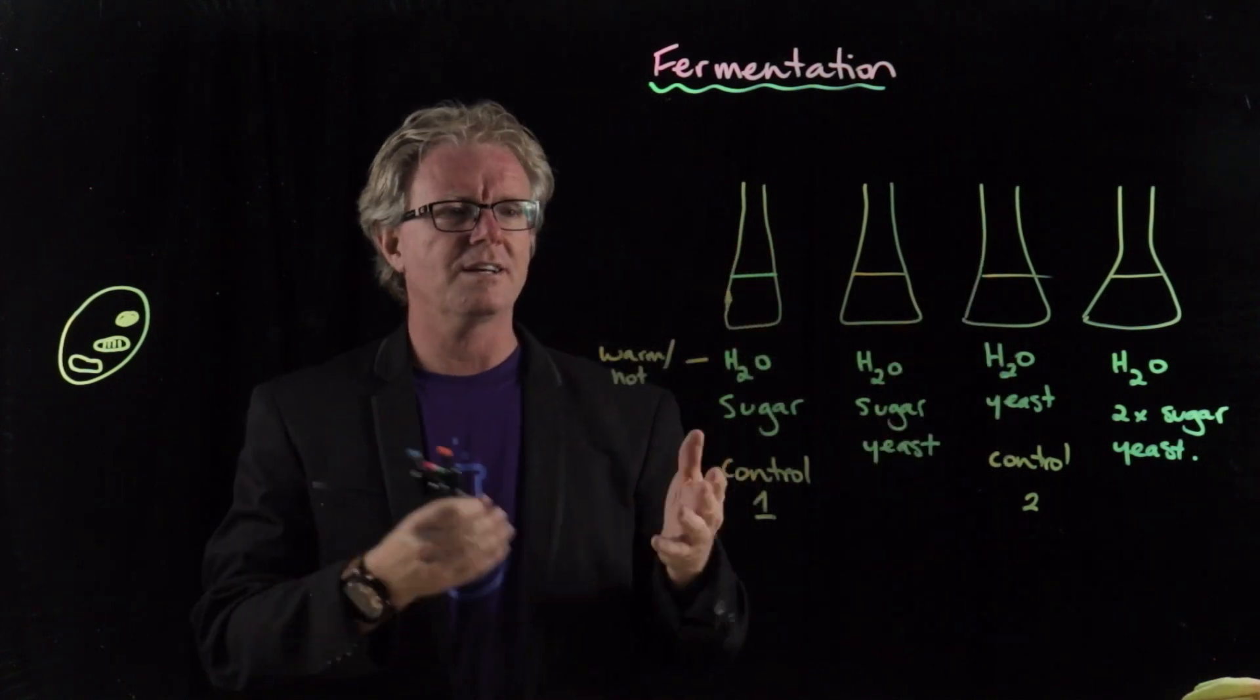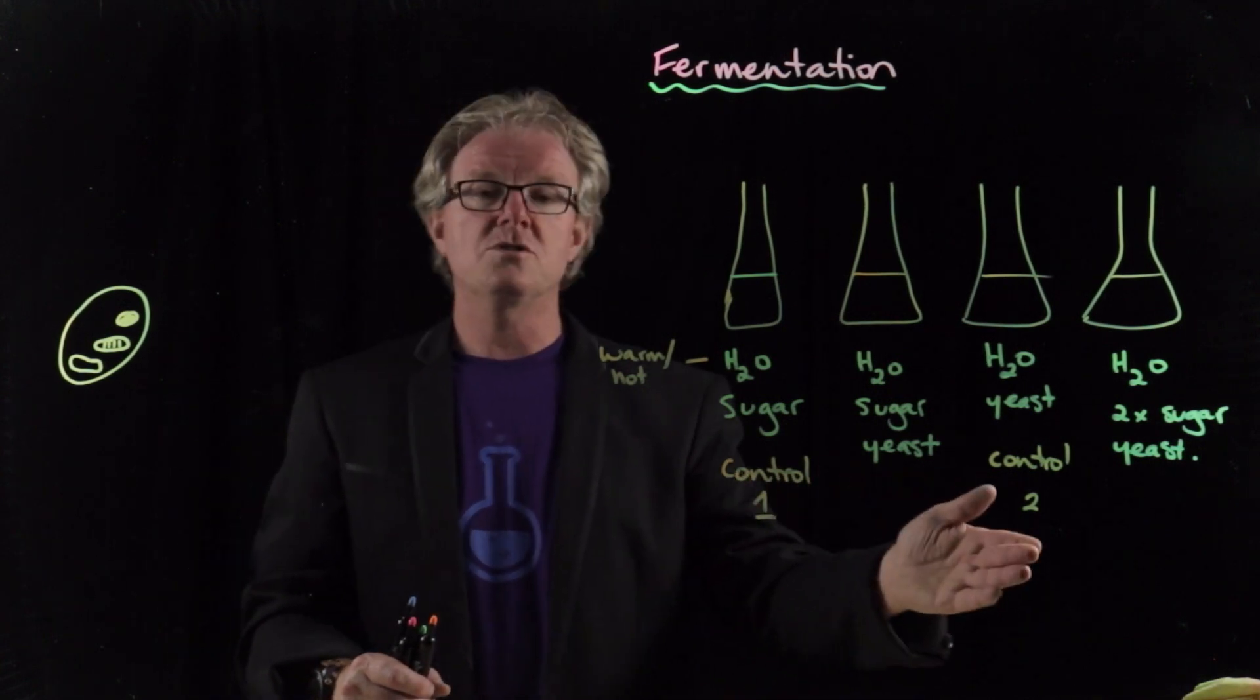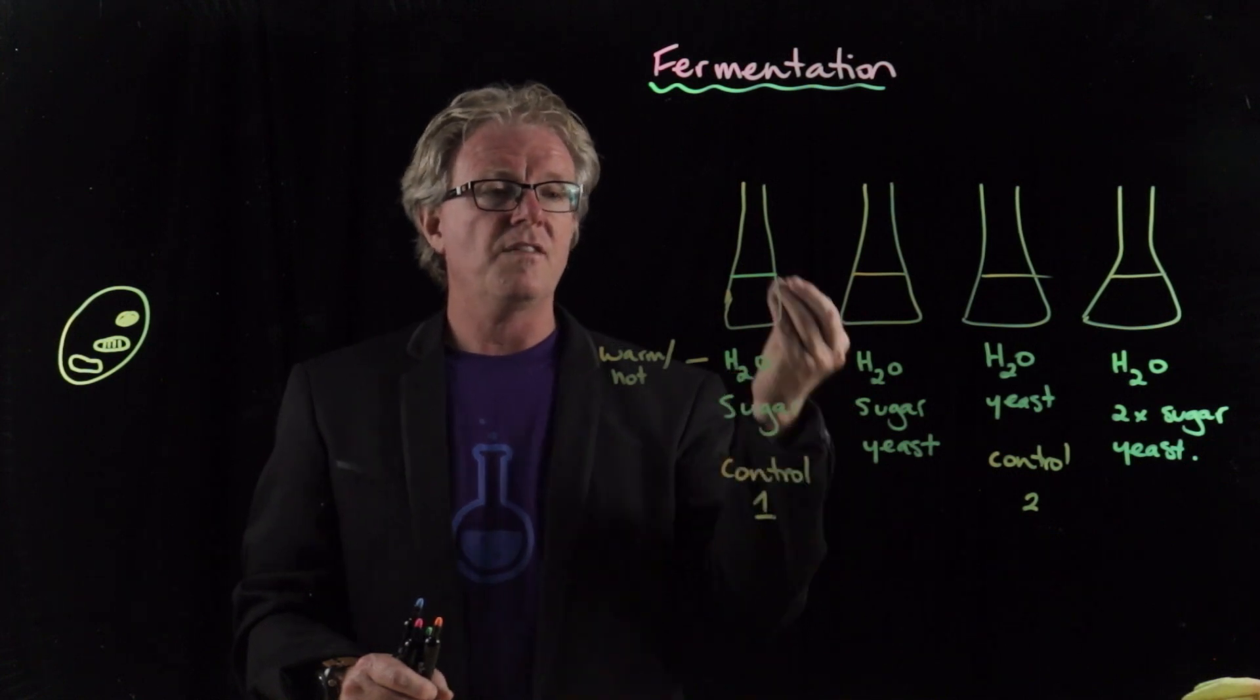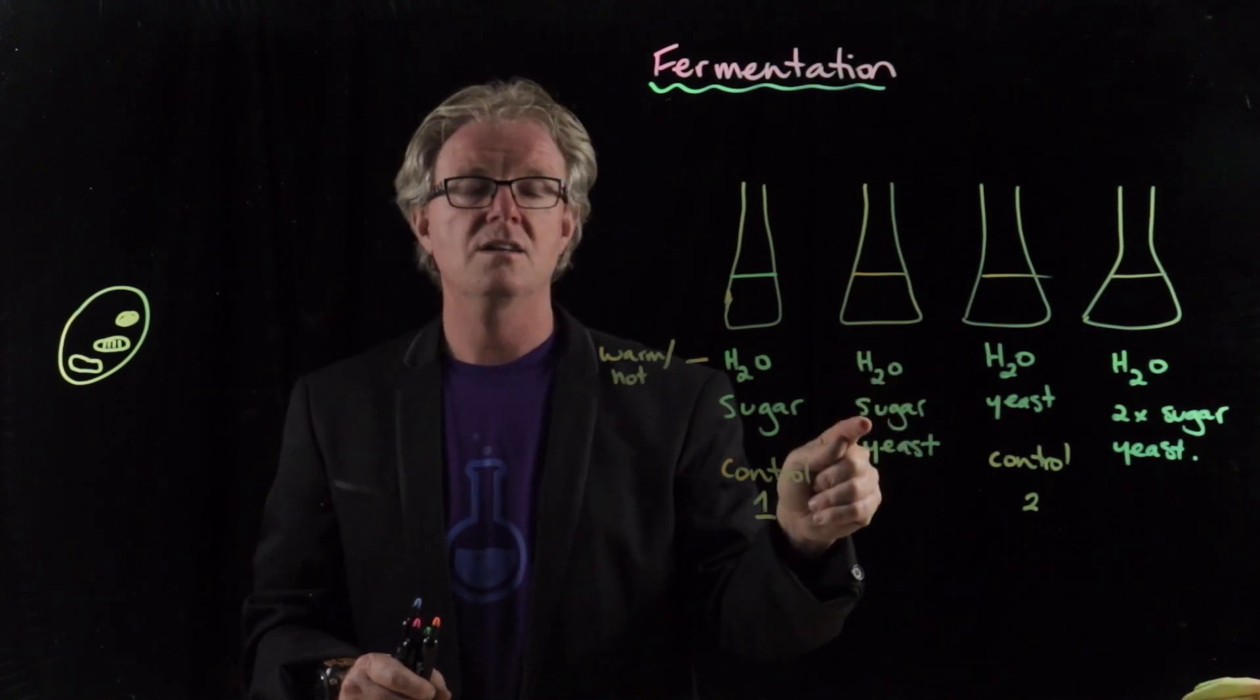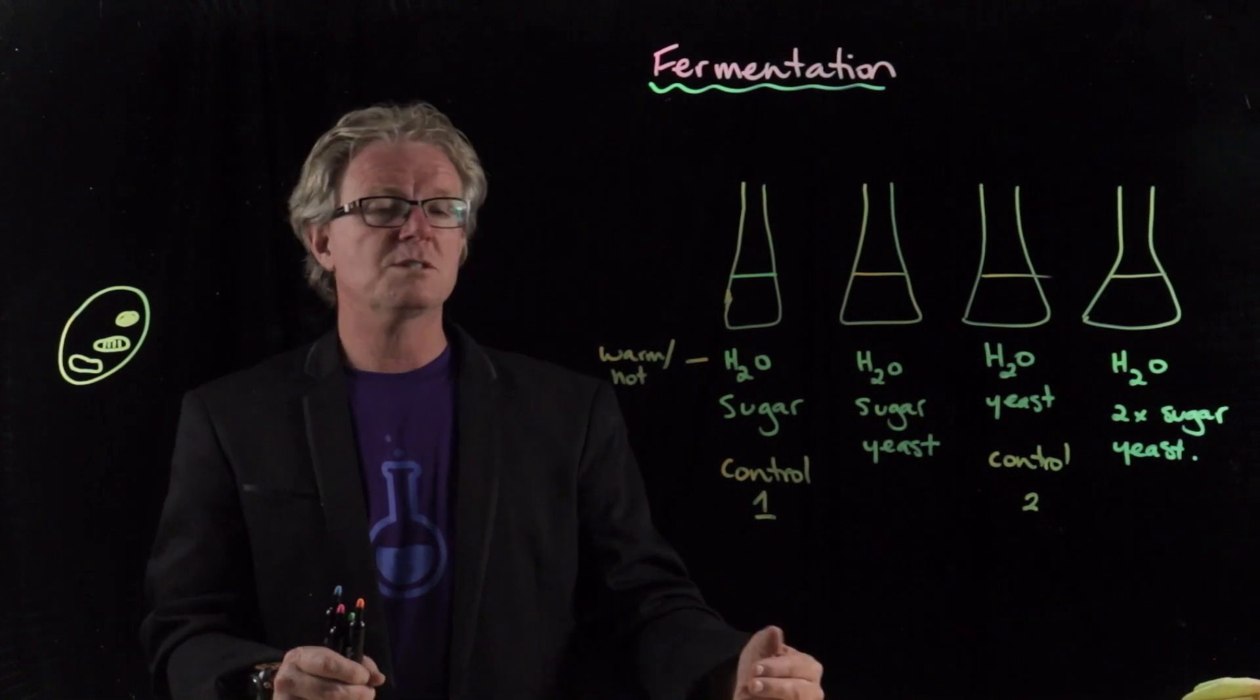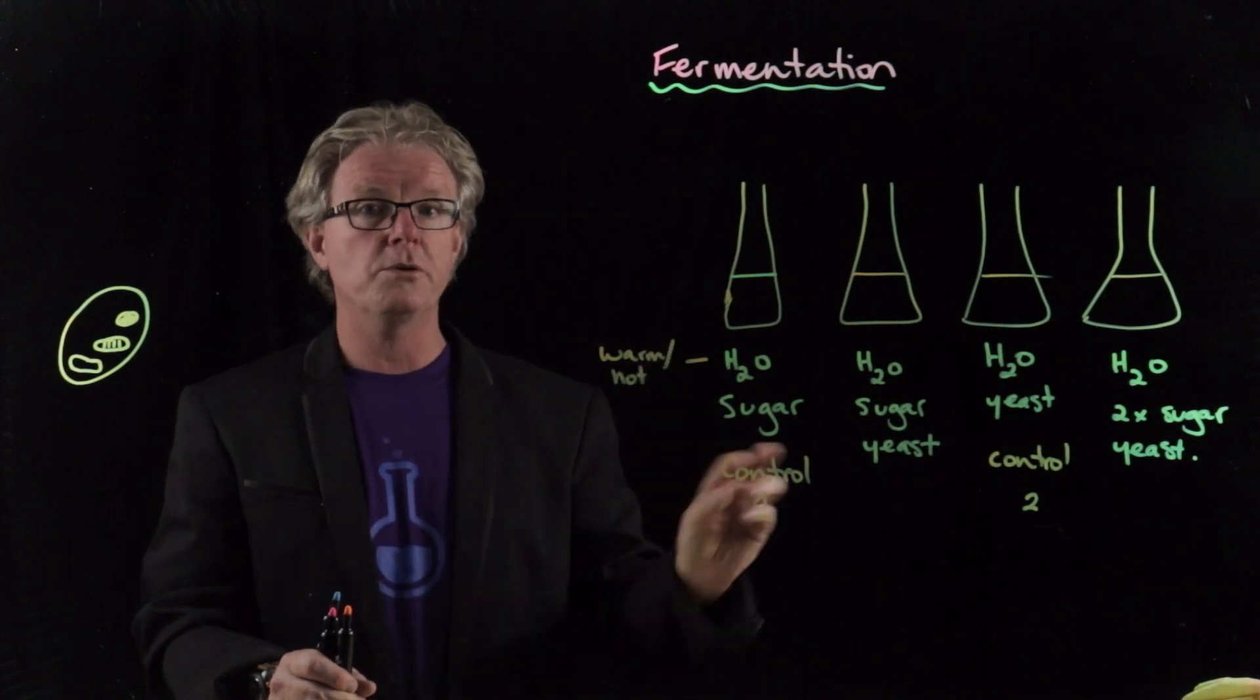If we think about control two, we've got the water and the yeast. Well, we need the sugar as the reactant to ferment. And so we should expect nothing to happen as well, because you've just got water and you've got yeast. If we get bubbles coming from there, we've got a problem, right? It's telling us something a bit weird going on. But this is what we need to do when we set up an experiment is to ensure that we have controls to test that the reason why we're getting fermentation is because of the yeast, the enzymes in the yeast and the sugar. So it makes our experiment more valid. We're testing what we're supposed to be testing.